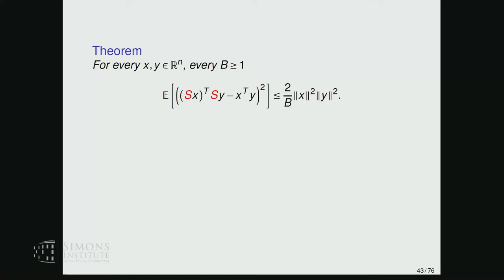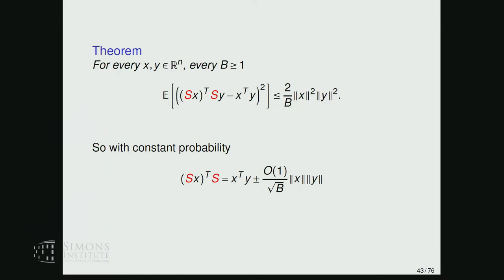Restoring the 1/B factor: for two vectors X and Y, the count-sketched dot product approximates X^T Y with additive error bounded in variance by 2/B times ‖X‖²‖Y‖². By Chebyshev's inequality, with constant probability we get an additive error of 1/√B times the product of norms. This compares favorably to JL, where you project onto 1/ε² Gaussians to preserve Euclidean norms up to 1±ε.